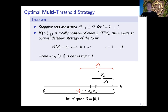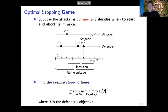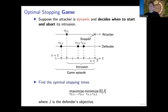Depending on how large L is, you can actually have quite sophisticated response strategies — more sophisticated, I would say, than current intrusion response systems. But the drawback of this strategy is that it's very exploitable. If the attacker knows we follow this particular strategy, it can be clever and try to avoid triggering the response. So suppose now that the attacker is dynamic and strategic, knows the defender's strategy, and will adapt accordingly to decide when to start or stop the intrusion.